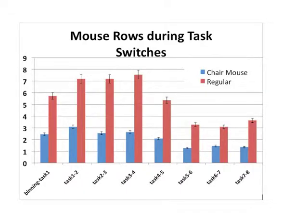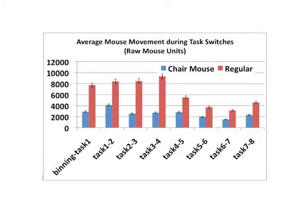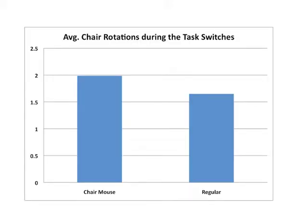We compare results of standard mouse users to ChairMouse users. Our results show that mouse rowing and regular mouse movement was significantly reduced for both the binning task as well as task switches throughout the study. Additionally, we analyze the chair rotation performed during task switches and find that the average amount of chair rotation between the two groups is nearly identical.